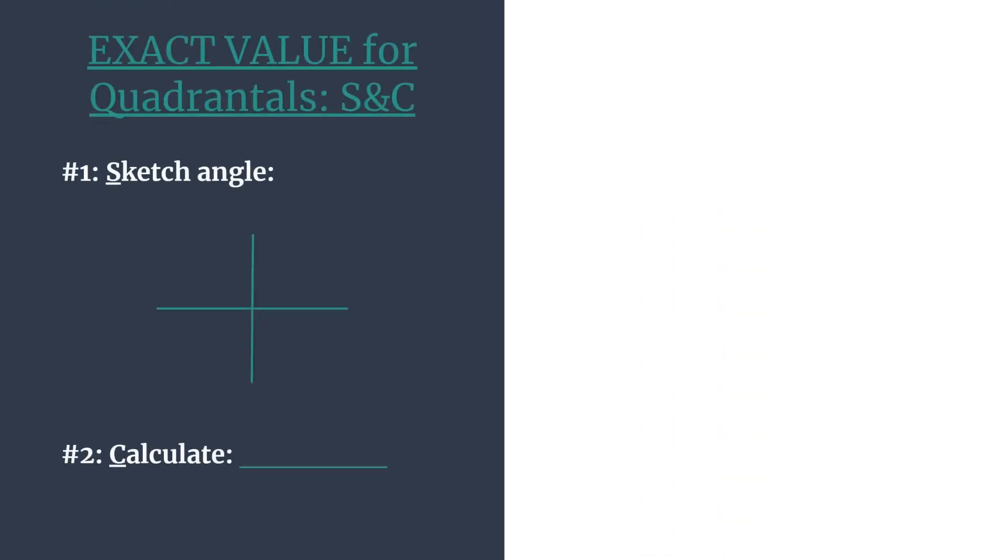So here's our simplified template. We'll first sketch the angle's terminal side. We'll find the coordinates easily from there. And then we'll calculate our trig ratio for cotangent of 3π/2.